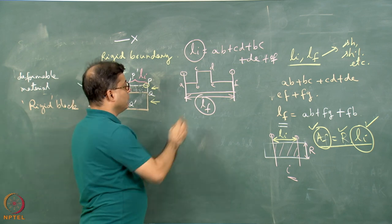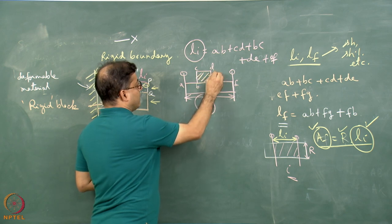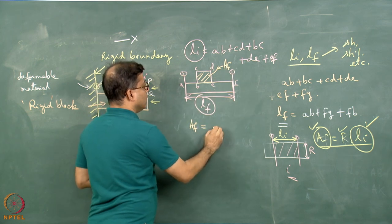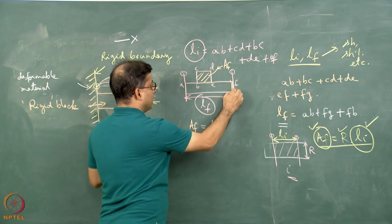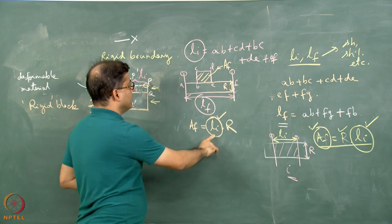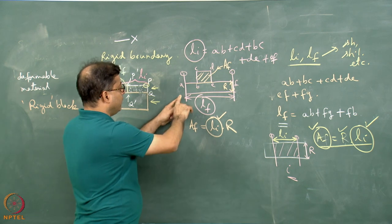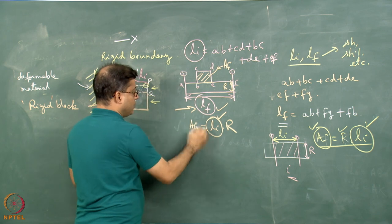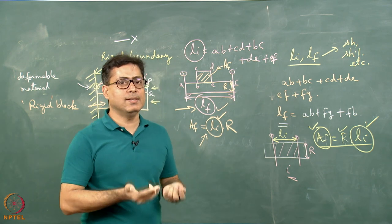If I go by the area balance method, I have to find out the area of this rectangle or square, say it is A final. Then A final is equal to L initial — the distance between the two pin lines — multiplied by this distance R. From there, Li can be obtained. Once Li is known — the distance between the two pin lines before deformation — and L final is known, the distance between the two pin lines after deformation, from these two we can find out the strain parameters. So the fold geometry may change; the process remains essentially the same.